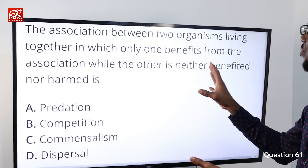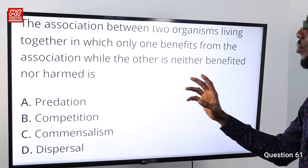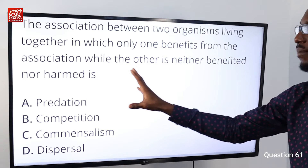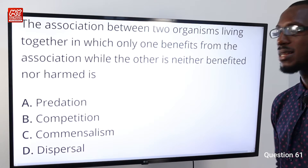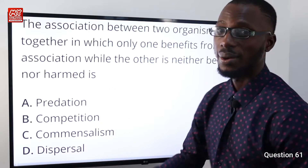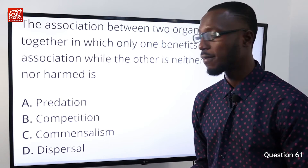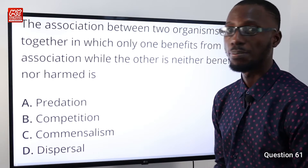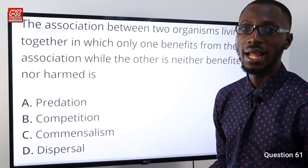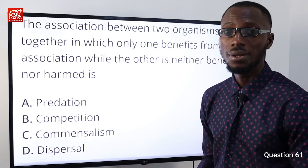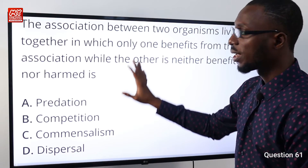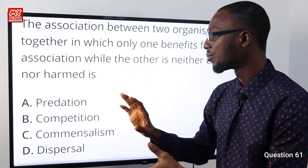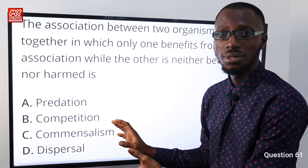The association between two organisms living together in which only one benefits from the association while the other is neither benefited nor harmed is referred to as commensalism. Predation is like a lion hunting down antelope. Competition involves fight for food, survival, meeting partners. Dispersal — from the word disperse — means to spread in order to get a new plant or new species via various agents. So, looking at what the question presents, where one benefits and the other is neither harmed nor benefited, the correct option is C.